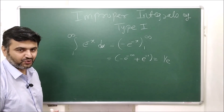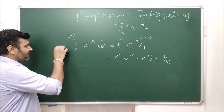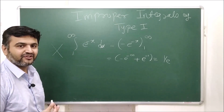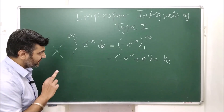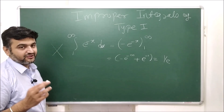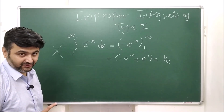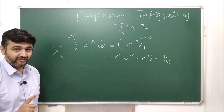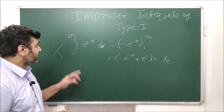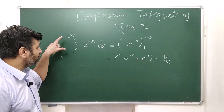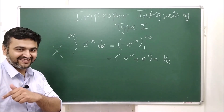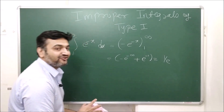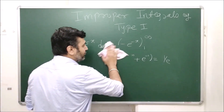This was acceptable back in 11th or 12th grade, but if you are doing engineering now, this approach is totally wrong. You have studied the fundamental theorem of calculus, you know the concept of antiderivatives, and you also know that you cannot apply Riemann theory here because the domain is unbounded.